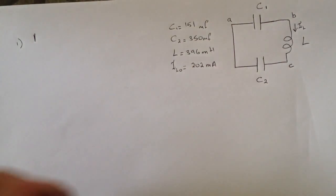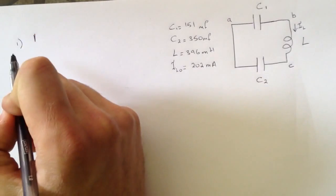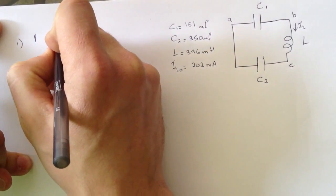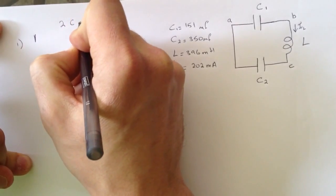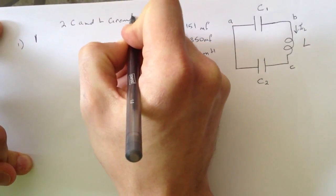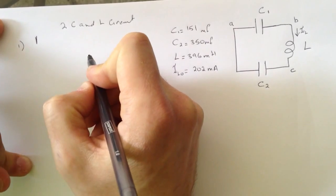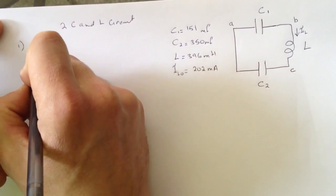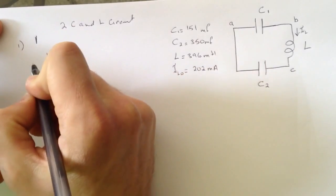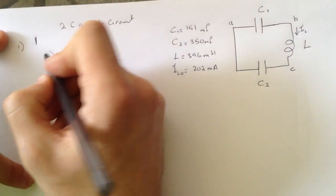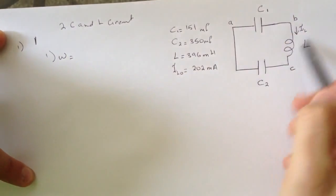Hi guys, this is another YouTube video for solving a smart physics problem. This time the problem is the 2C and L circuit. It took me a long time to do it, but let's see how it's going to go. The first question is asking what is the omega of this circuit that you can see here.